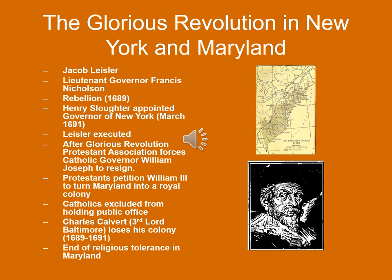Meanwhile, events in Maryland also took a turn for the worse. After the Glorious Revolution, the Protestant Association there forced the Catholic governor of the colony, William Joseph, to resign. The Protestants began petitioning King William III to turn Maryland into a royal colony. During this time, they excluded Catholics from holding public office, and as a result, Charles Calvert, the third Lord Baltimore, lost his family's control of the colony. In 1691, King William III turned Maryland into a royal colony, which was actually the end of religious tolerance in Maryland. Up until the time of the American Revolution, Catholics were not allowed to vote or hold office — ironic for a colony begun as a safe haven for Catholics.